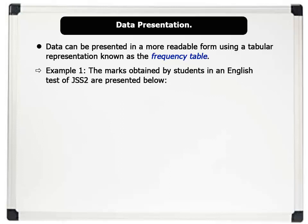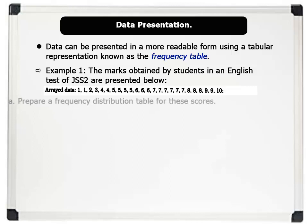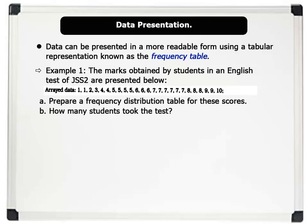Example 1. The marks obtained by students in an English test of JSS2 class are presented below. Now, A. Prepare a frequency distribution table for these scores. B. How many students took the test? C. How many students obtained a pass mark if the pass mark is 5?